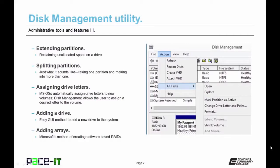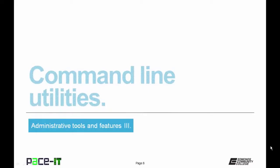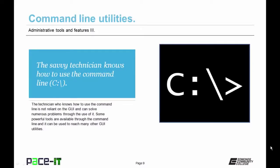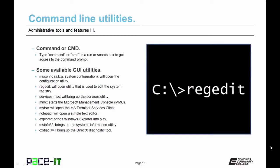Microsoft operating systems automatically assign drive letters to new volumes, but Disk Management allows the user to assign a desired drive letter instead. The Disk Management tool makes adding a drive easy through the GUI, and also makes adding an array easy — this is Microsoft's method of implementing a software-based RAID. To access the command line, use command or cmd from a run or search box.